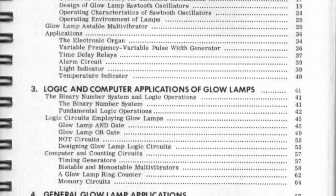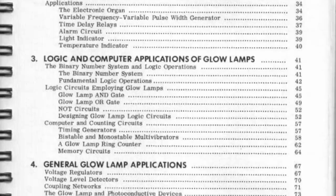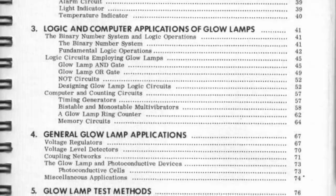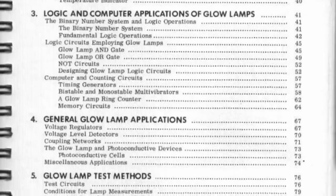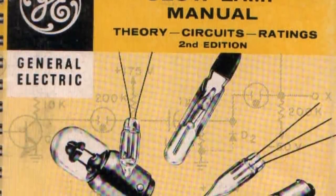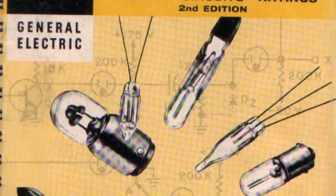Neons can be used to make astable multivibrators, bistable multivibrators, monostable multivibrators, sawtooth generators. All sorts of unbelievable cool things can be done with neons. There's actually a lot of fantastic information and documentation about building circuits with neons.